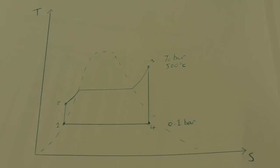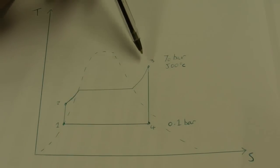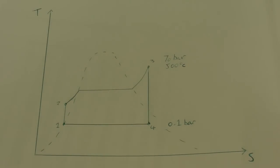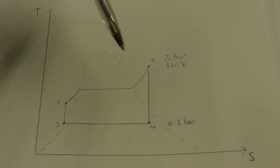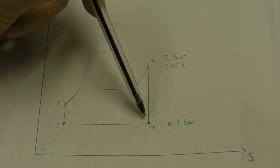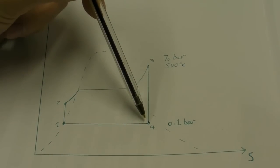Example Q0.10 on your question sheet asks you to consider a STEAM power plant operating on an ideal Rankine cycle, like the one I've drawn here. It tells us that STEAM is entering the turbine at 70 bar and 500 degrees C. So point 3 on the Rankine cycle is where the fluid — the steam — enters the turbine, so the pressure is 70 bar and the temperature is 500 degrees C. And it tells us that the fluid is cooled at a pressure of 0.1 bar, so down at point 4, where the steam exits the turbine, the pressure is 0.1 bar.